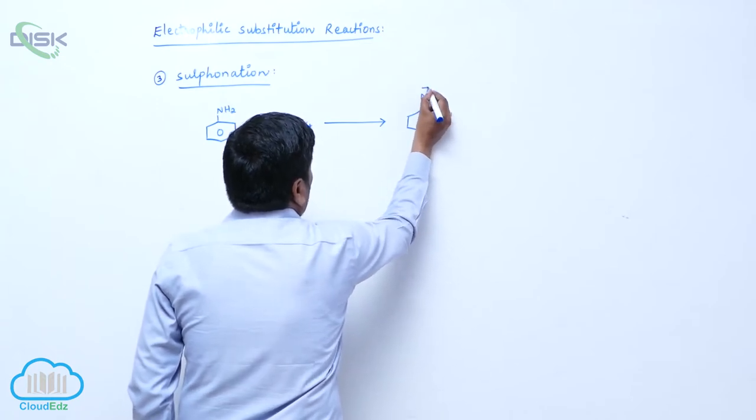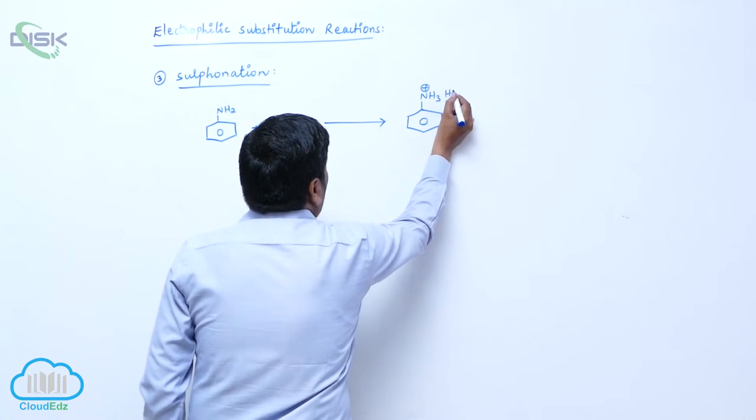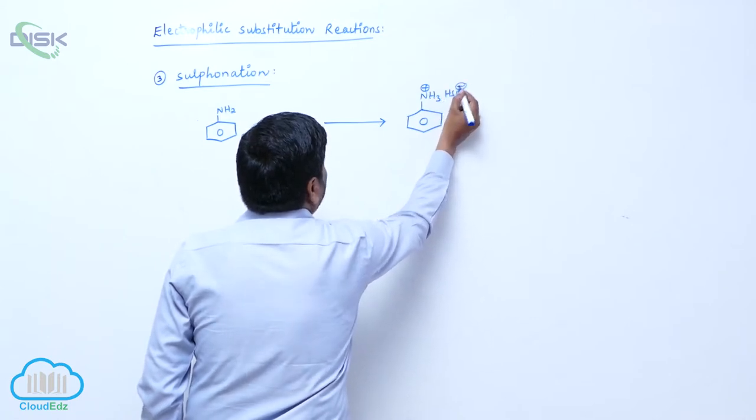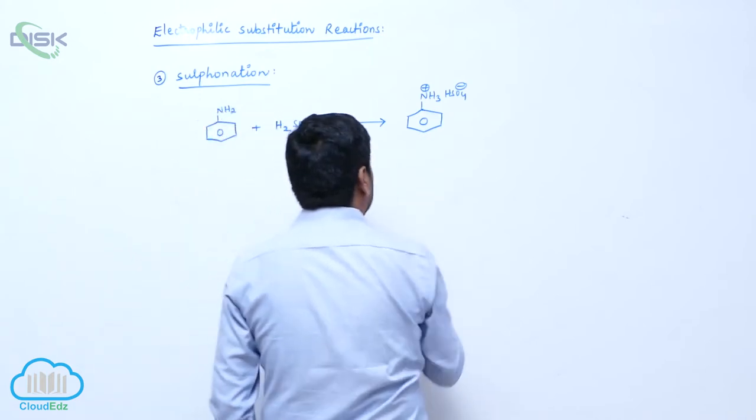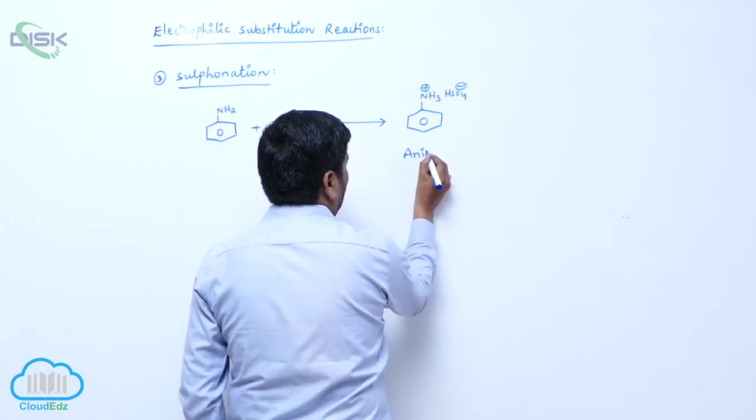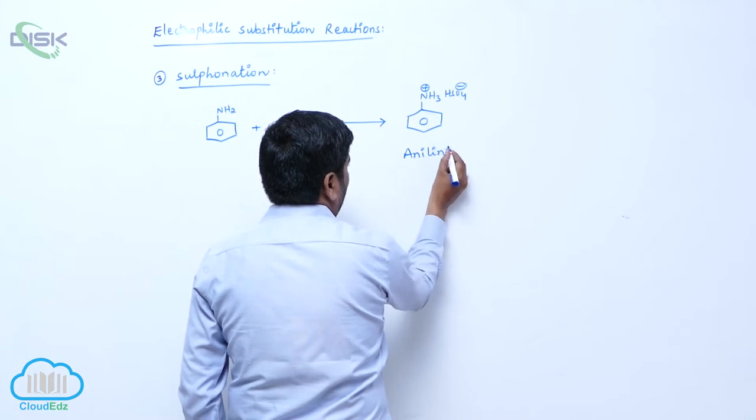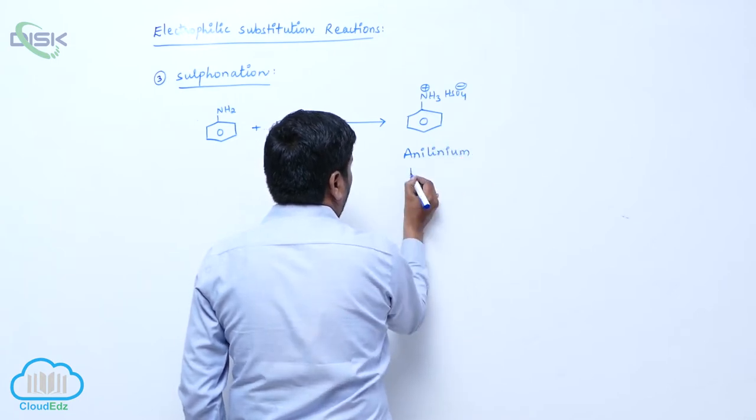NH3 plus, HSO4 minus, this is anilinium bisulphate.